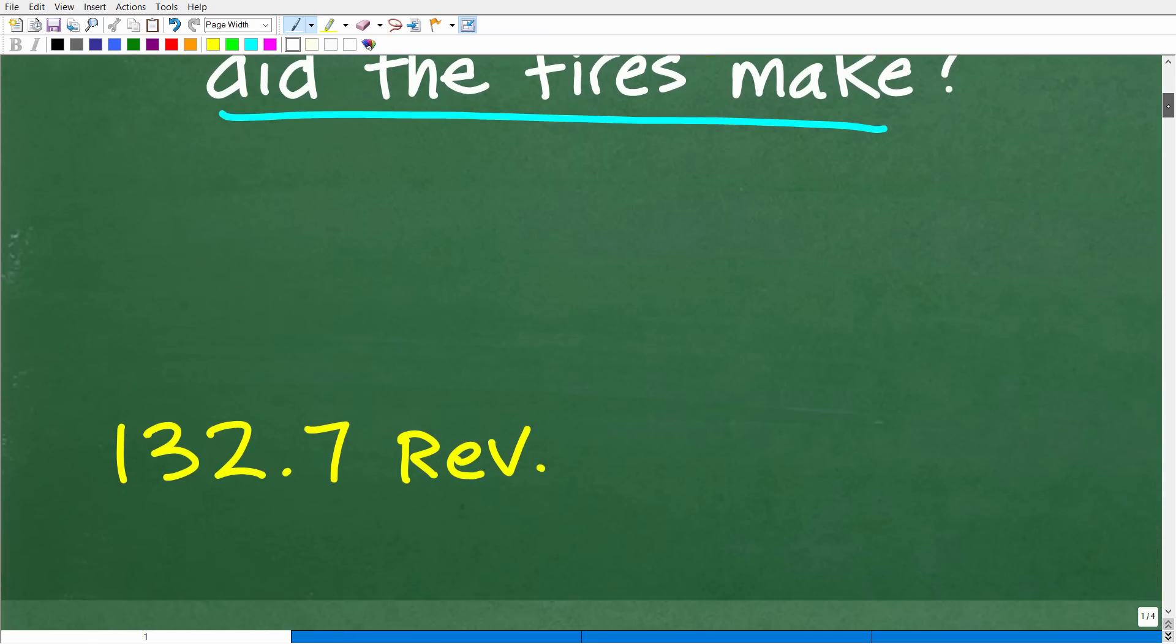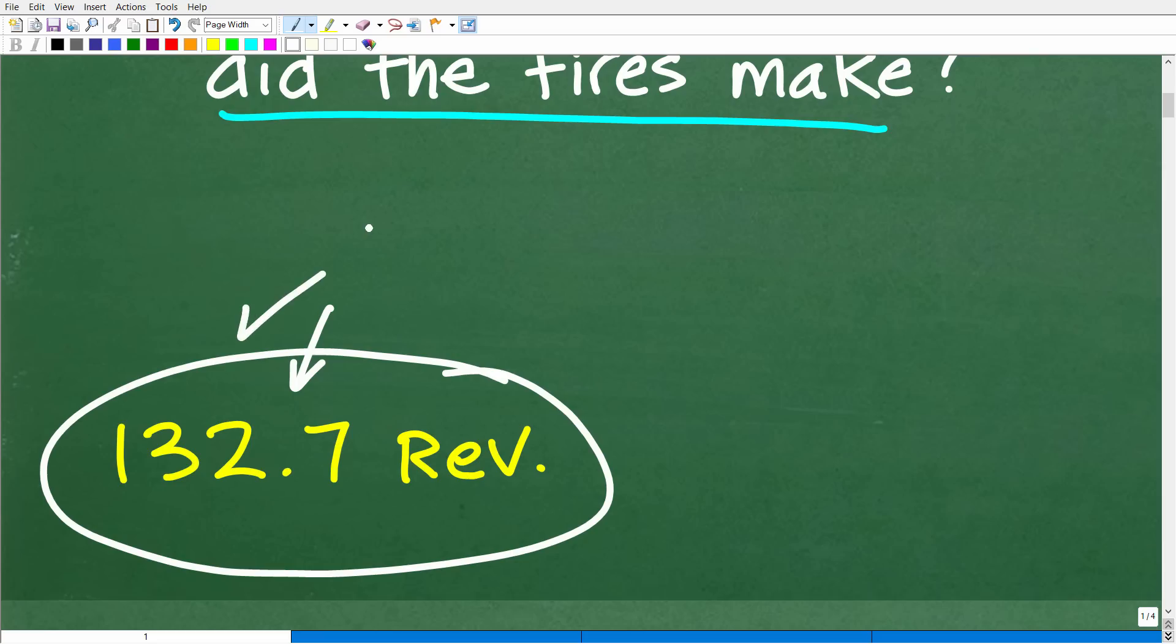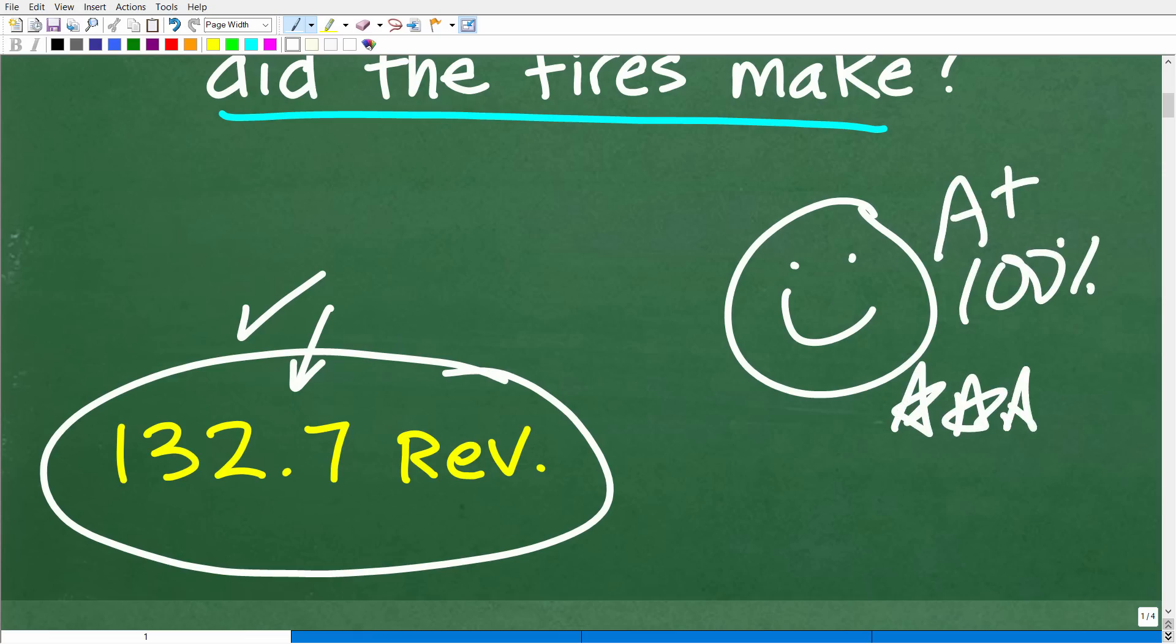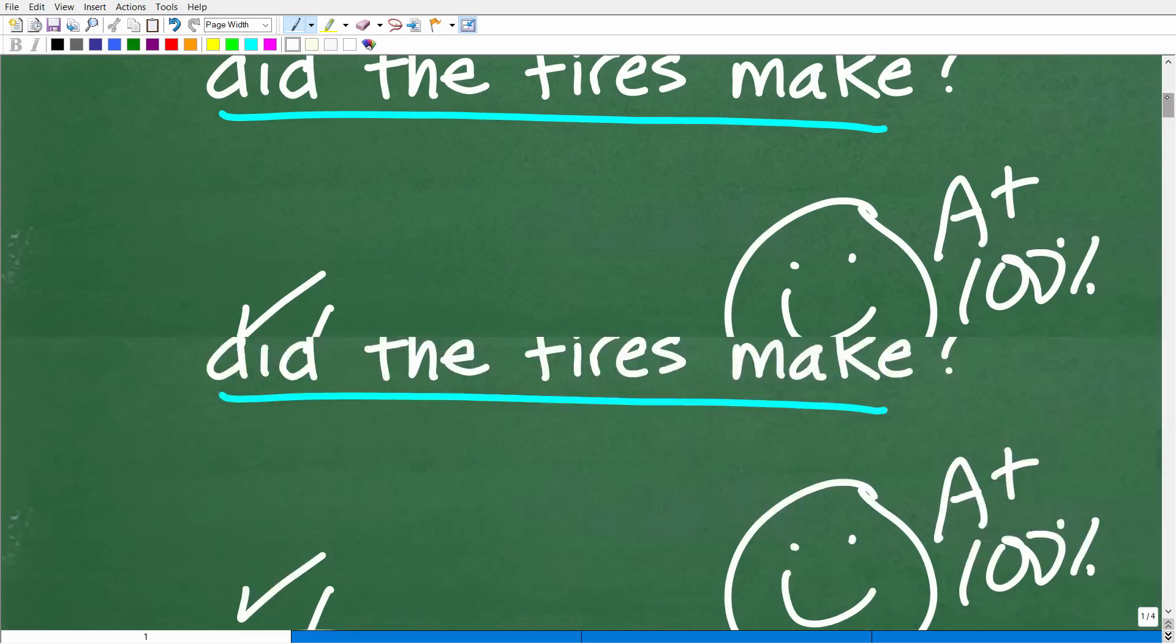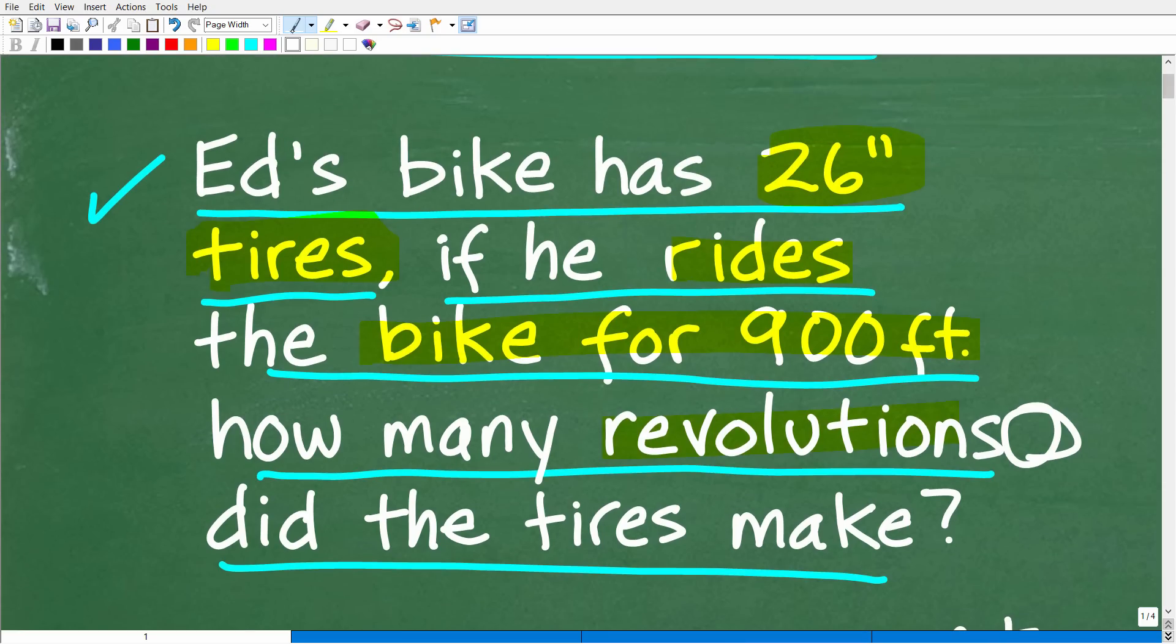The correct answer is approximately 132.7 revolutions. Now, there is definitely room for slack in this answer. So if you got like 133, 134, even 131, I would consider that as a correct answer. So if you did this right, I would definitely give you a nice happy face and a plus, 100%, and multiple stars so you could brag to your friends and family that you are a certified professional expert in the area of circumference.